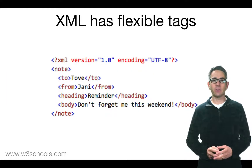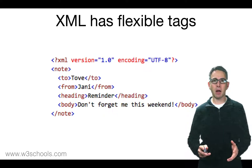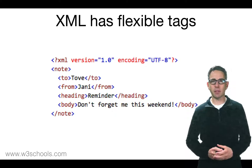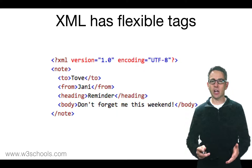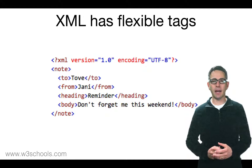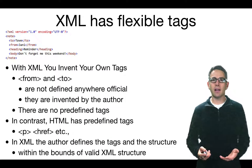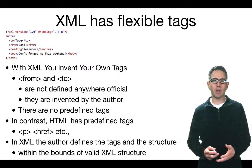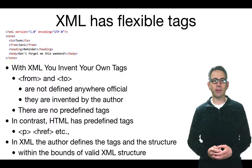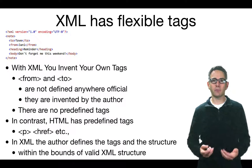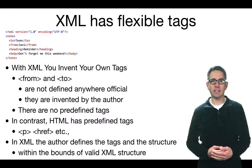XML has flexible tags. In this example from w3schools.com, the tags have metadata associated with them — a note, a to, from, heading, and body. Those tags were defined by me; no one else made them up. When you write an XML document you're free to invent your own tags, though they may be constrained by the software reading them. In general, XML doesn't have any predefined tags.